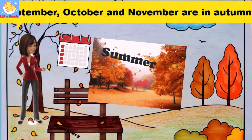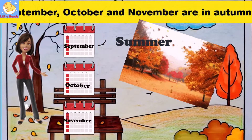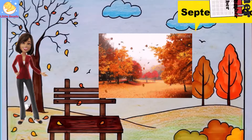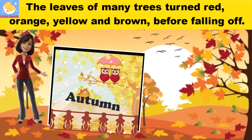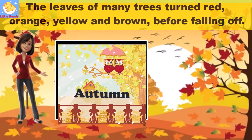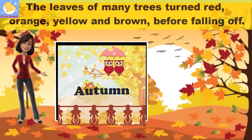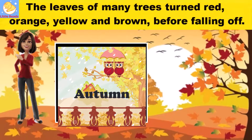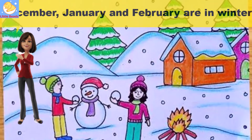September, October and November are in autumn. The leaves of many trees turn red, orange, yellow and brown before falling off.